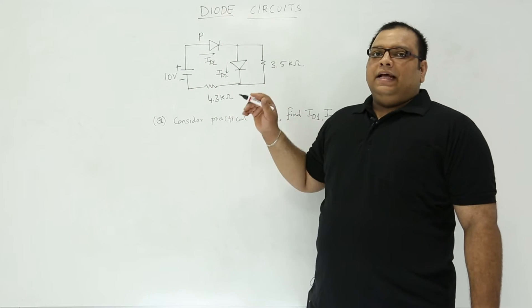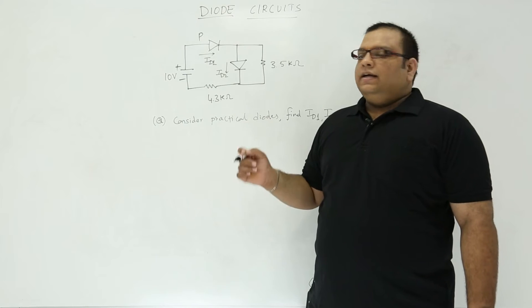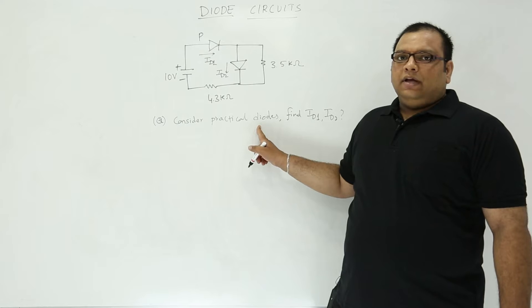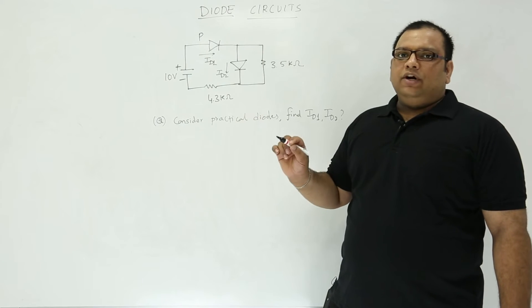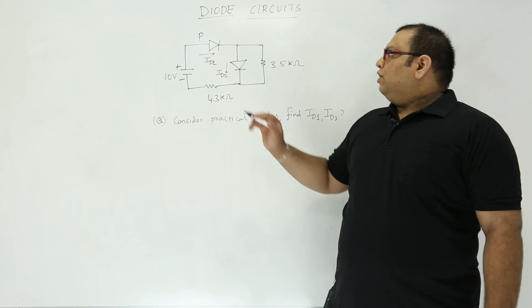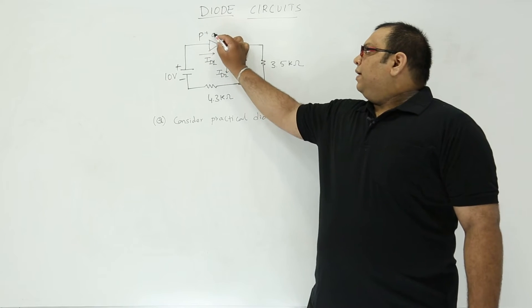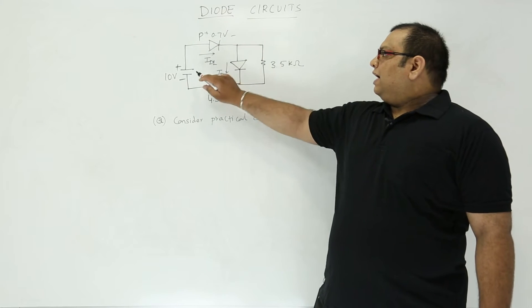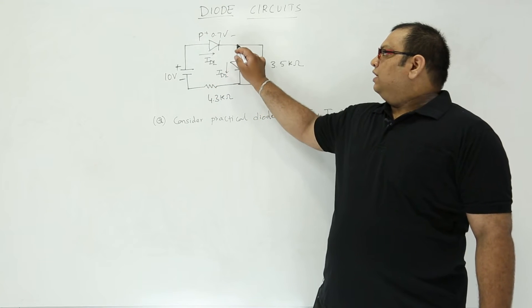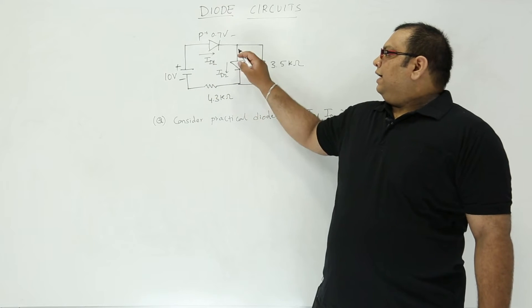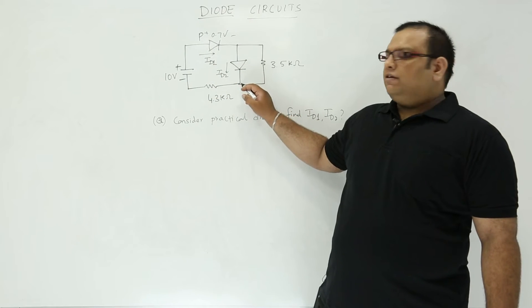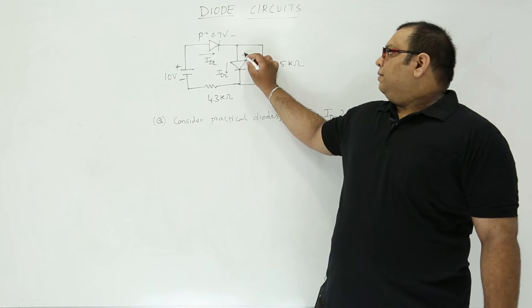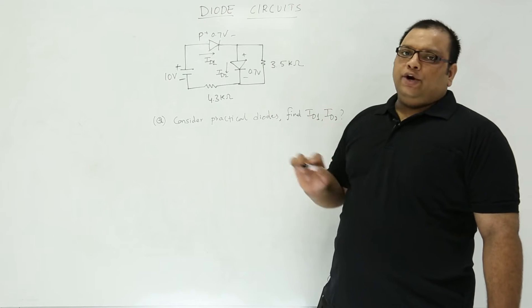When you forward bias this diode, the diode can be replaced by a cut-in voltage. Since the question says to consider practical diodes, we have to consider the diode cut-in voltage, which will be 0.7 volts. After a drop of 0.7 volts, the voltage at the next point will again have another 0.7 volt drop across the second diode as well.